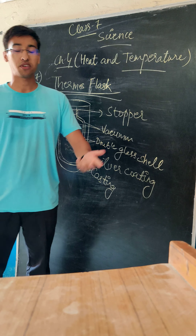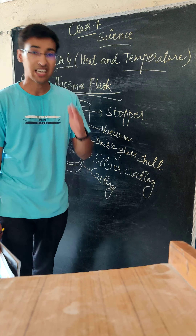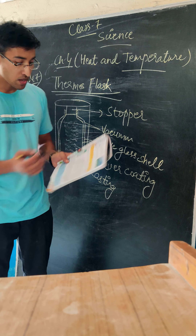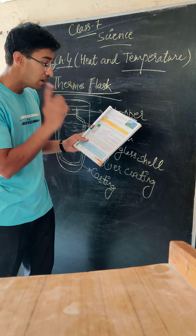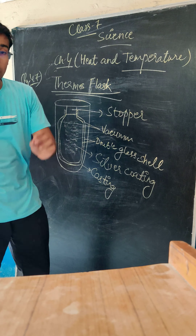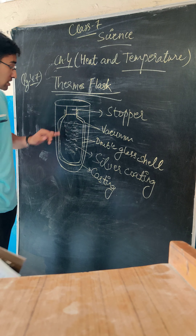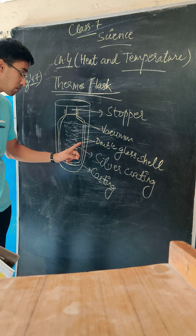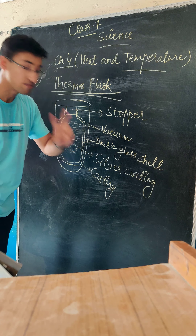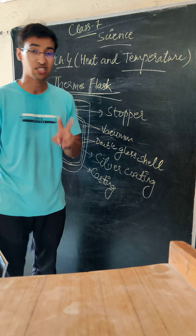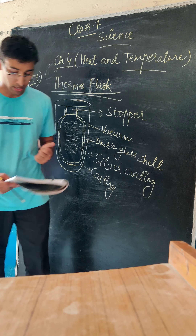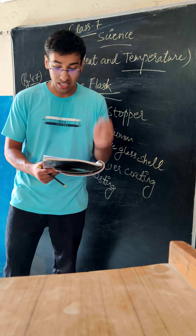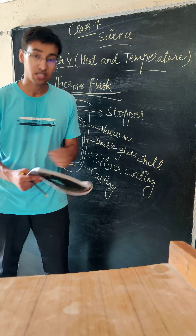The conduction, convection, and radiation effect is kept to a minimum — that is why we call this a thermos flask. It is a double-walled glass vessel.